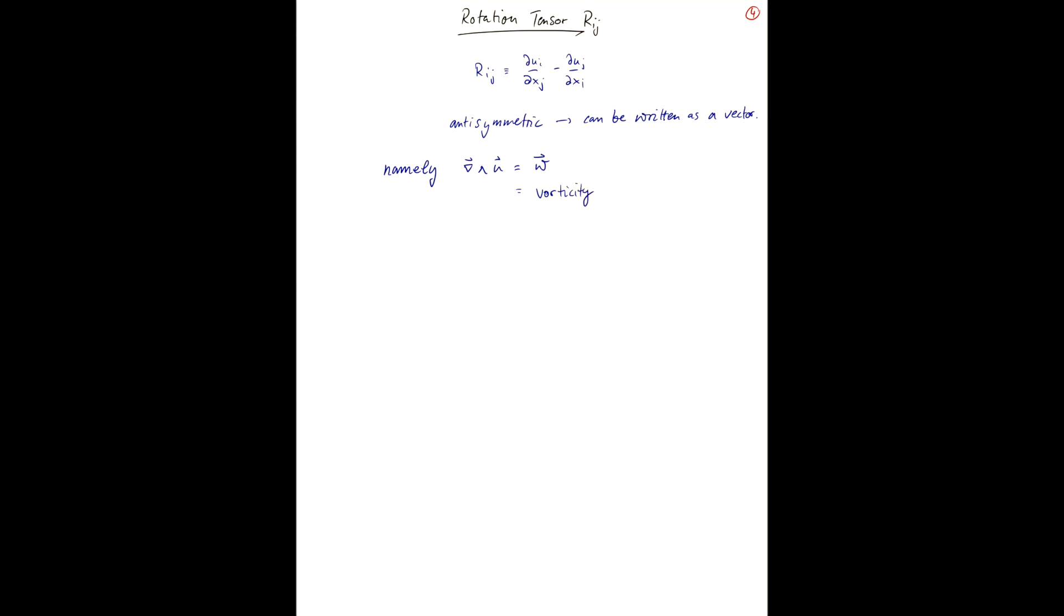And as we've shown before, we can write Rij using the alternating tensor epsilon_ijk curl of U, the k element, which is just minus epsilon_ijk omega_k.